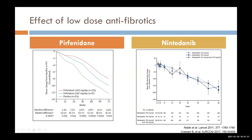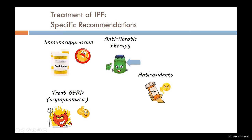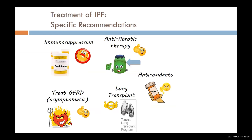In nintedanib, a similar graph shows the overall group, those on 100 mg twice a day, and those on 150 mg twice a day — the lung function seems to go down by the same amount in each group. In general, IPF is now being treated with these antifibrotic drugs, and we do think they work. I'll stop there to answer questions, but I now want to hand over to Dr. Keshavjee to talk about lung transplant.